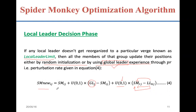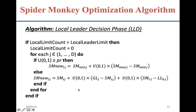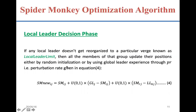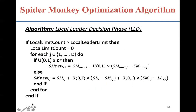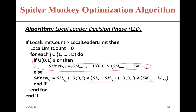This equation in the local leader decision phase is used for position update, and the same perturbation rate probability is used. Solutions are updated either by random initialization or by using this equation. Based on the probability, members are either randomly initialized or updated using this equation. This phase is initiated only if the condition is satisfied — that is, when the local limit count is greater than the local leader limit.